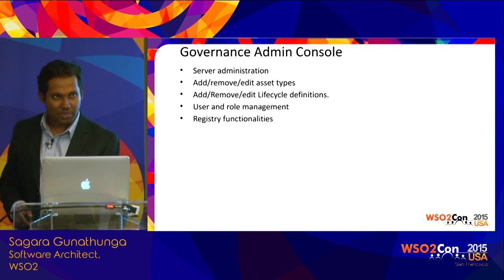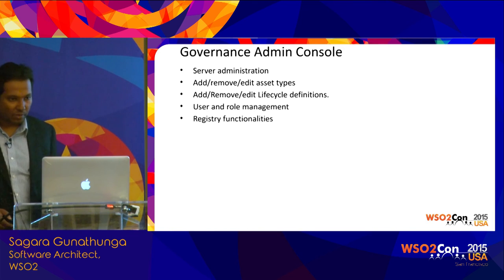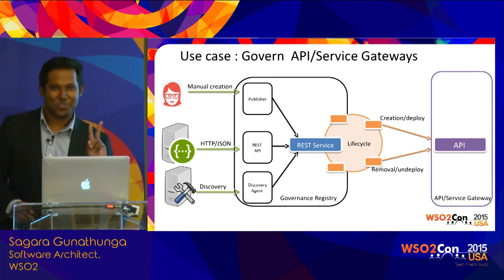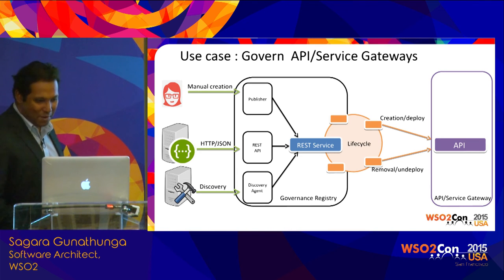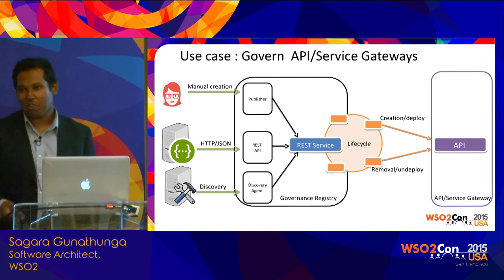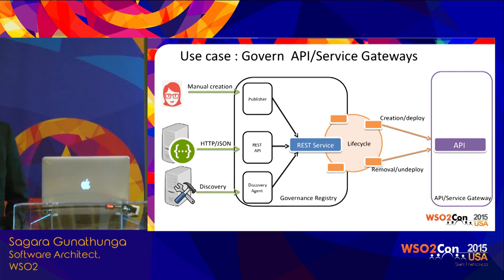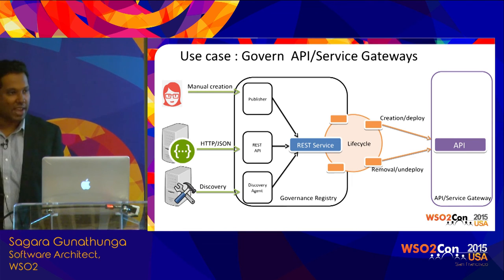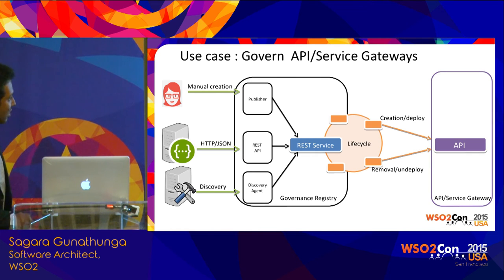This is the traditional admin console, which still exists. Moving to use cases — one pattern we learned from customers over the last year and a half: people may already have their own gateway, either hardware or software, and their own key managers. What they're often missing is the publisher, store, and governance aspects. We already have a few customers who have built this solution. Using manual creation, the REST API, or a discovery agent, you can bring a REST service definition into the governance registry.